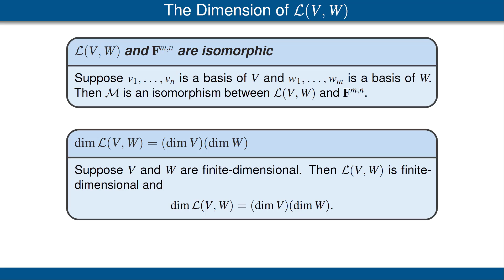The result above has a really nice corollary. Suppose V and W are finite dimensional. Then the dimension of the vector space of linear maps from V to W is equal to the dimension of V times the dimension of W. The proof follows immediately from the top theorem on this slide: because L is isomorphic to the vector space of m by n matrices, those two vector spaces have the same dimension, and of course the dimension of the vector space of m by n matrices is m times n.